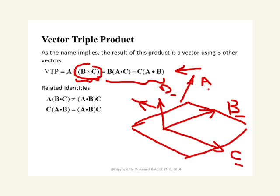To remember what is happening: A cross (B cross C) gives a vector parallel to the plane in which vectors B and C lie, which means it can be expanded in terms of B and C.